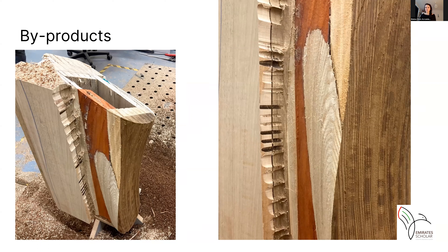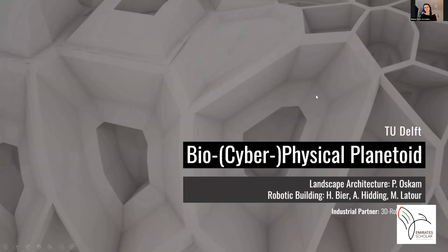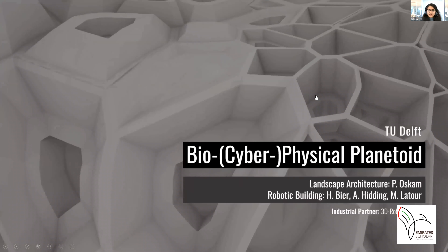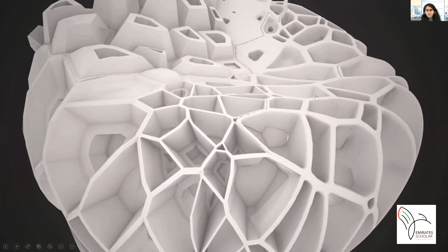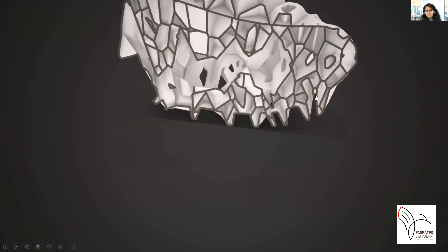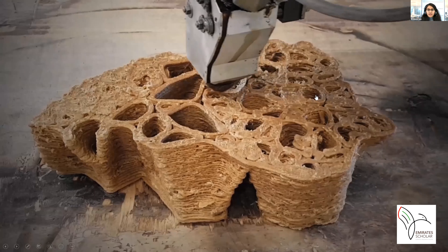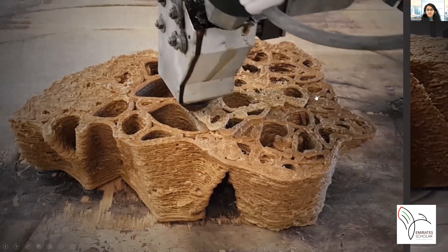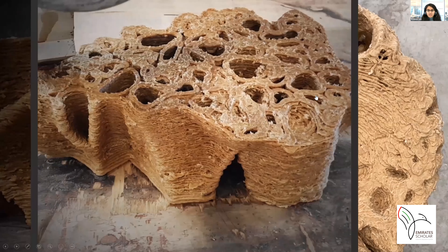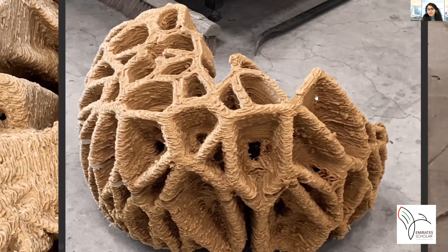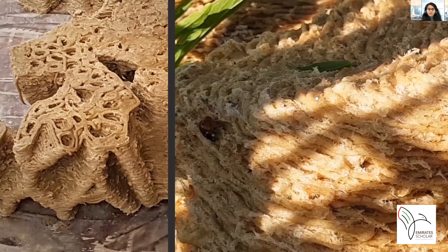Sawdust results as a byproduct of the milling process, which, following the same circular principle, is utilized for 3D printing. Here you can see the bio-cyberphysical planetoid, which is an example of 3D printing using wood and bioplastics as a composite material. This was done as part of research within the robotic building lab and is a design prototype meant to exist in symbiosis with nature and biodegrade over time — a precedent of what we can do with the byproducts generated from the wood milling process.